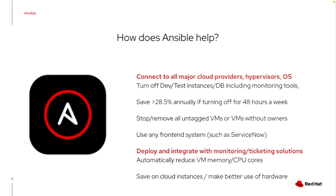Adding self-healing or self-remediation to right-size instances when CPU usage or memory usage is low across a certain period of time adds to that overall savings. I can also use Ansible to tie in existing processes and business rules through something like ServiceNow, which really helps make better use of cloud instances as well as on-premise environments.